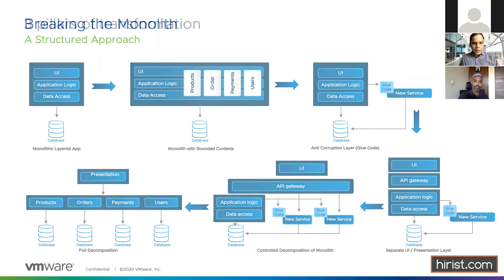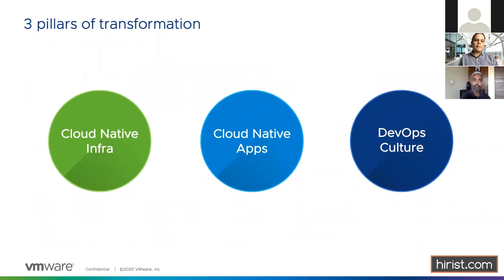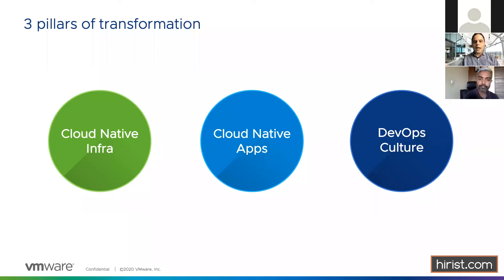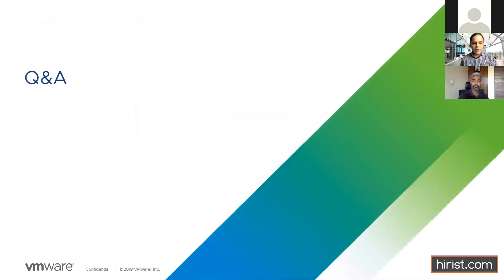In quick summary: cloud-native infrastructure is needed for app modernization; start thinking with a cloud-native apps mindset but recognize it may not solve everything — there are five R's and multiple cloud deployment options. Use domain-driven design to break your monolith, and build a DevOps culture of 'you build it, you run it.' That's the foundation of everything.